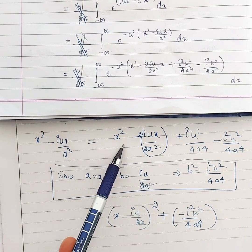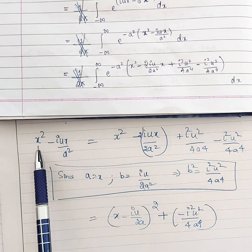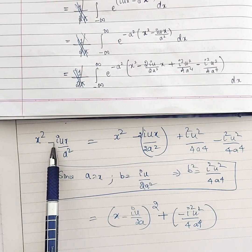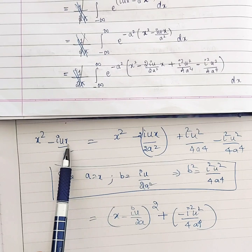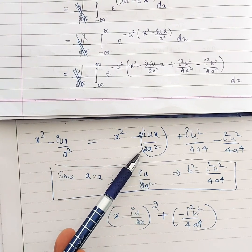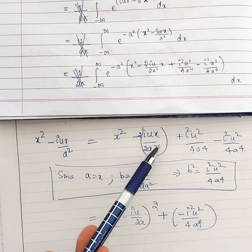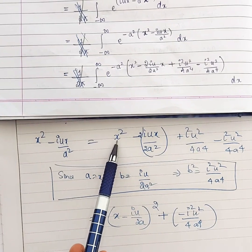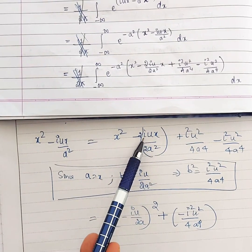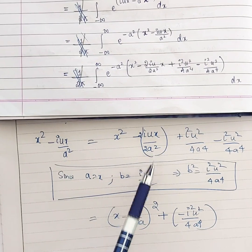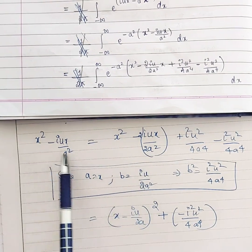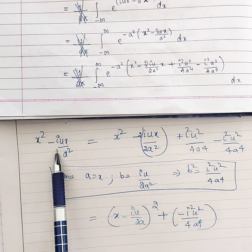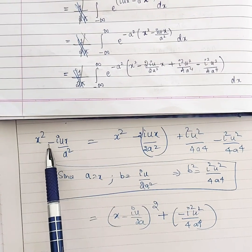We are completing the square for the expression x² - (iu/a²)x. We consider the form (a - b)² = a² - 2ab + b². Here the first term x² is a², so a = x. Comparing the second term with -2ab, we multiply and divide by 2, giving us 2ab = (iu/a²)x, so b = iu/(2a²).